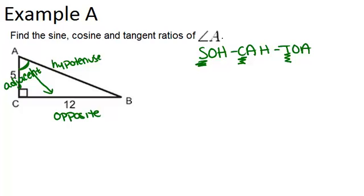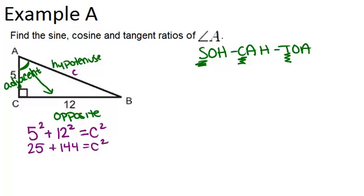In order to do all three ratios, we will need to know what the hypotenuse is. So we're going to pause and solve for the hypotenuse using the Pythagorean theorem, which we can do because it's a right triangle. We would have 5 squared plus 12 squared equals C squared. So 25 plus 144 equals C squared, which gives us 169 equals C squared, so C equals 13.